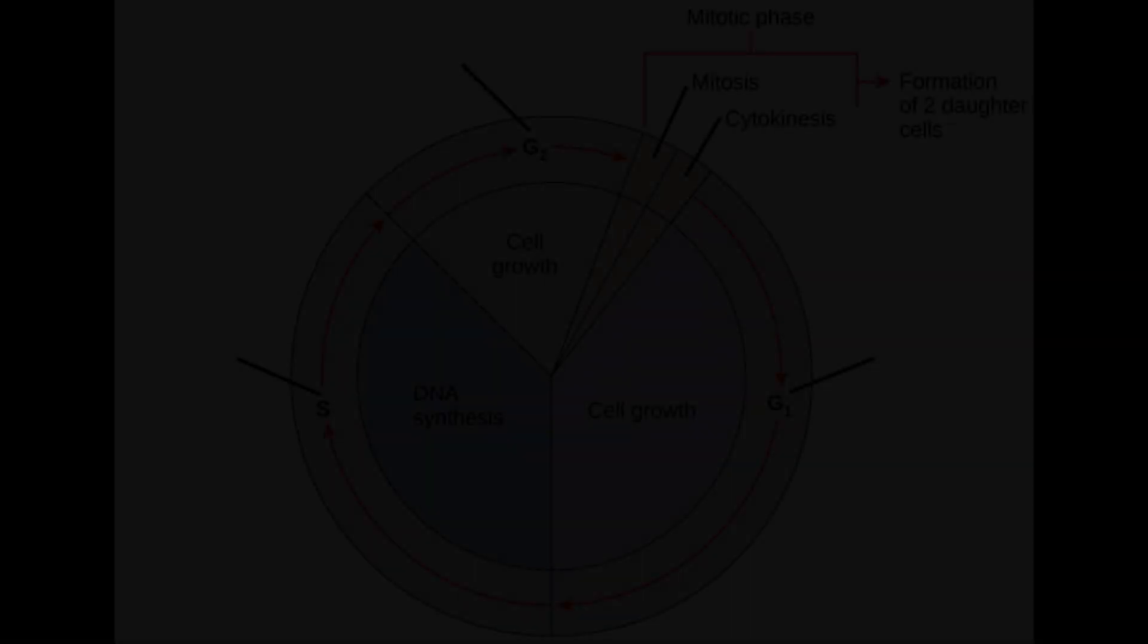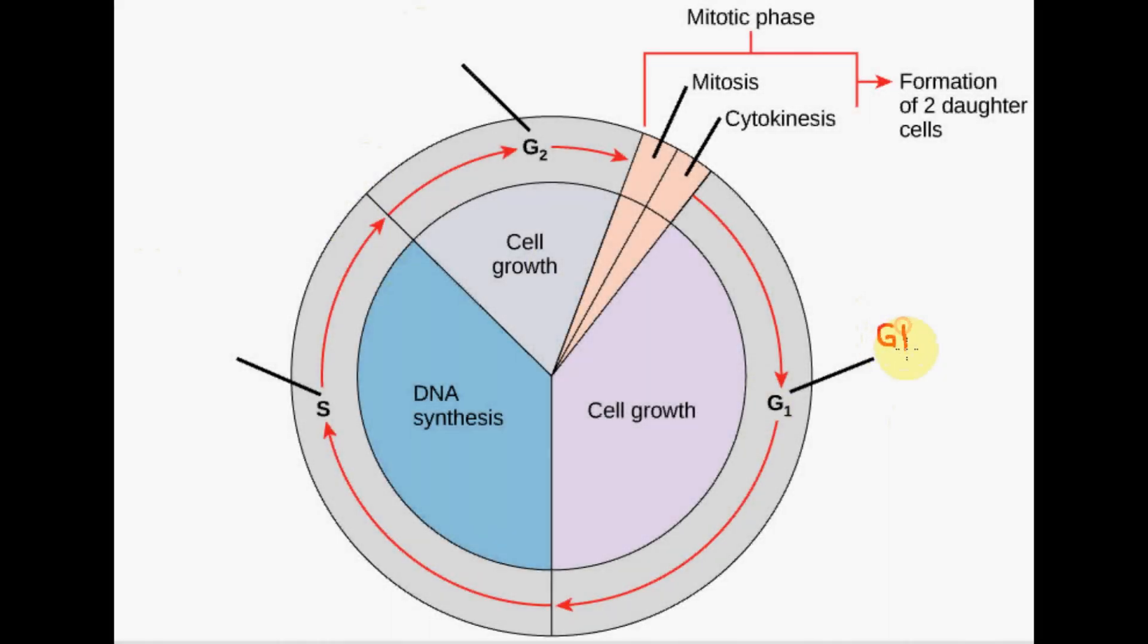The interphase is split into three phases. The first stage, the G1 phase, is where the cell increases in mass to prepare for cell division. The next is the S phase, where DNA is synthesized and replicated. The last stage is the G2 stage, where protein synthesis occurs.